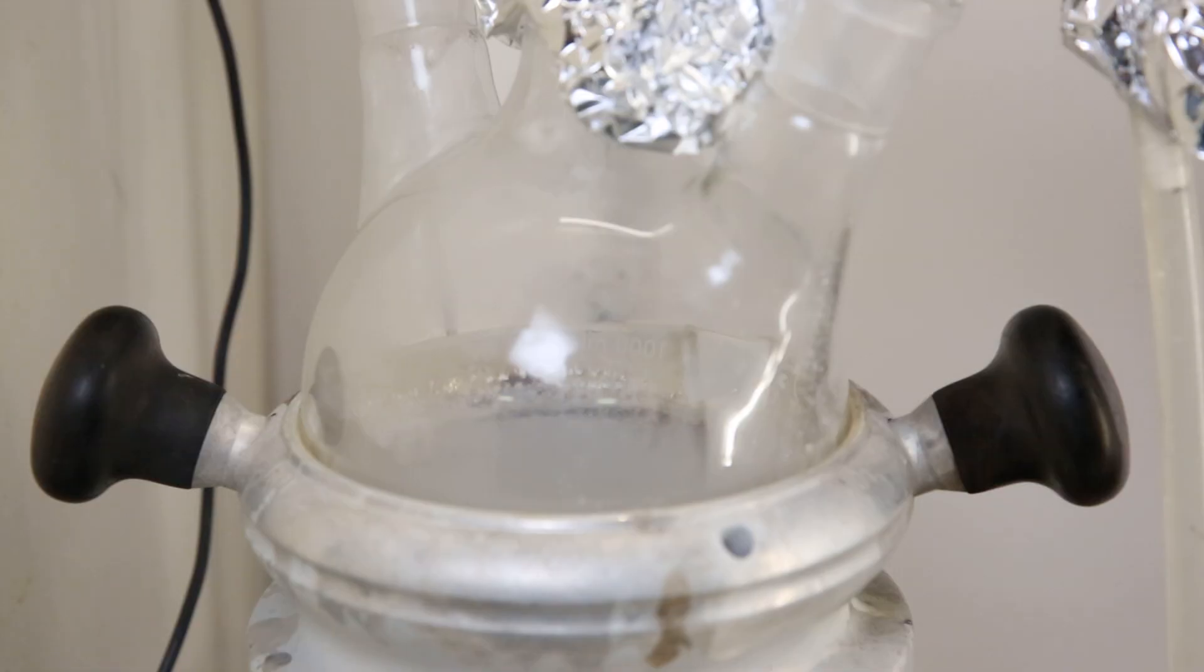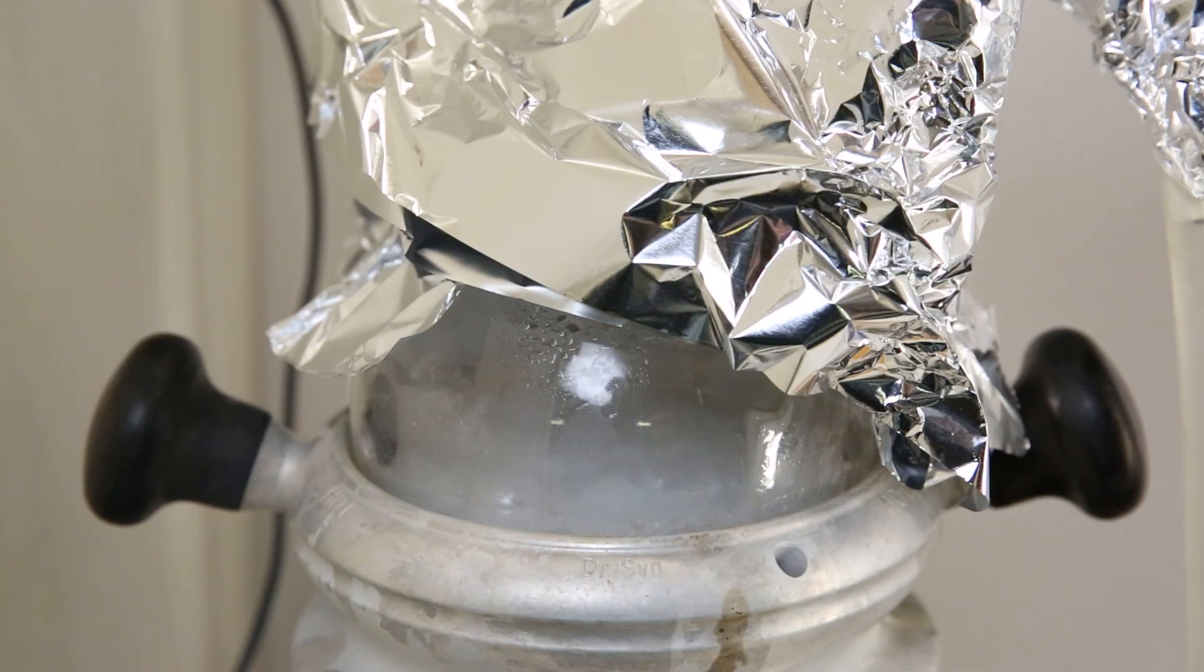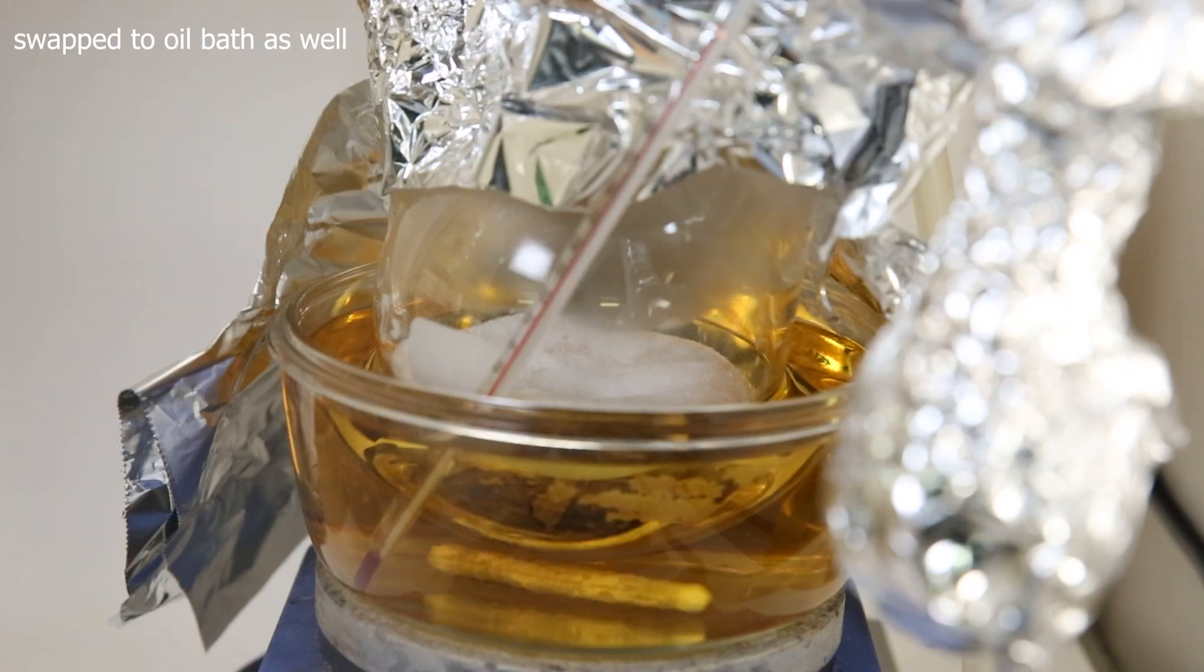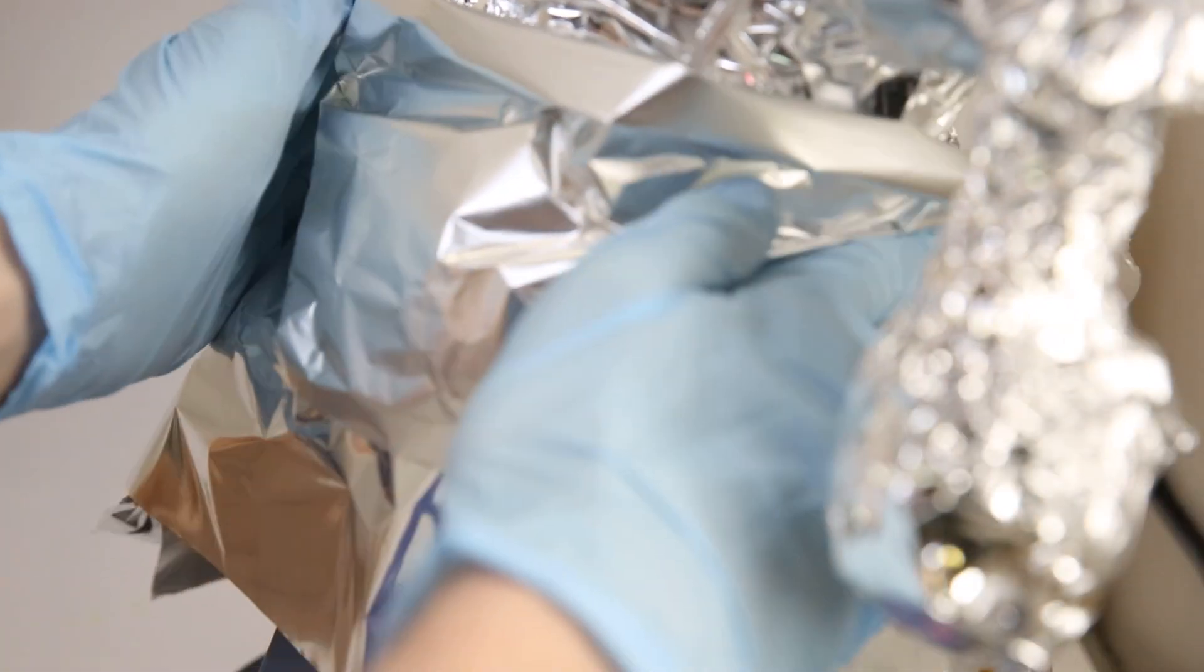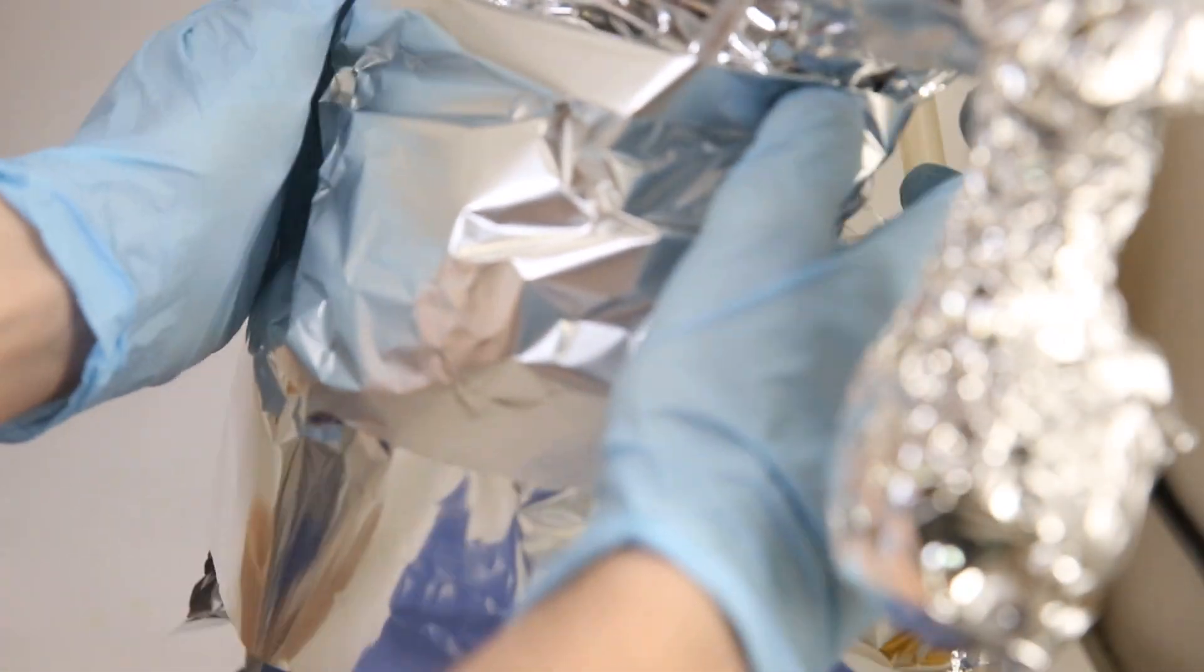Before I cover up everything, I heat it to 250C and make sure something starts to come over. After a while, it starts to boil and the first drops are arriving in the first receiving flask. Now that I know something is coming over, I can cover up the whole apparatus.